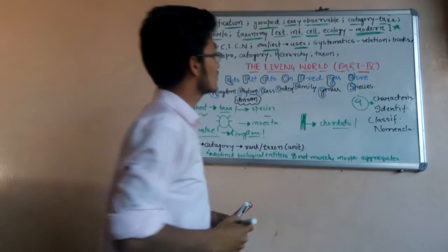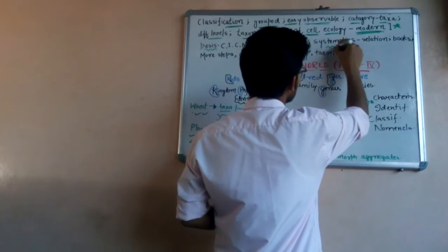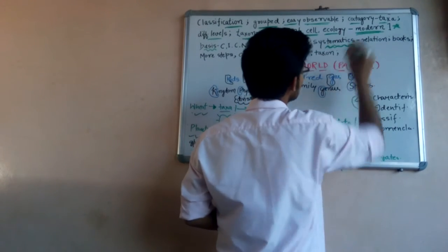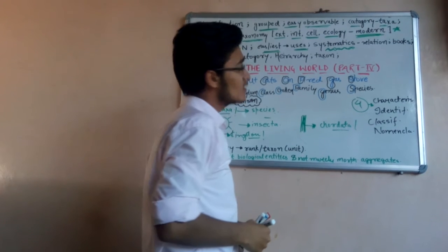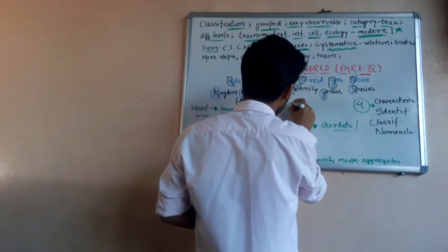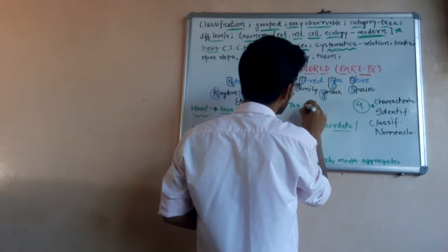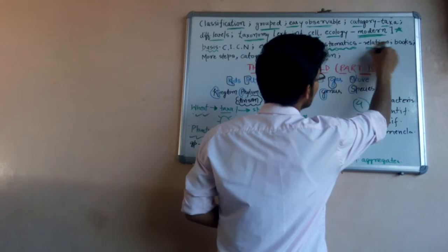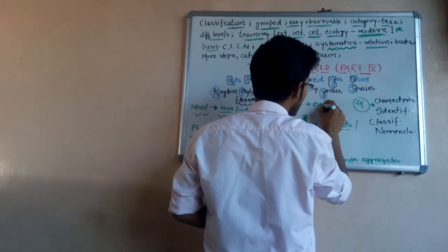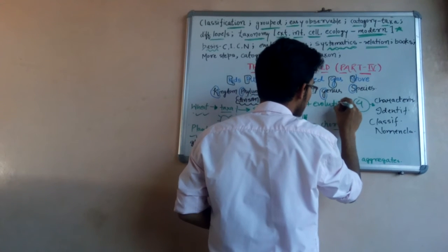Another wider term is systematics, and systematics is taxonomy plus the relationships or evolutionary relationships between organisms. It provides a broader term.